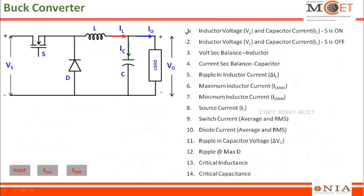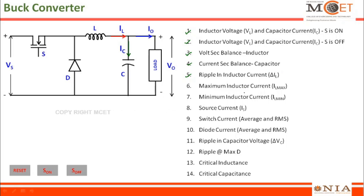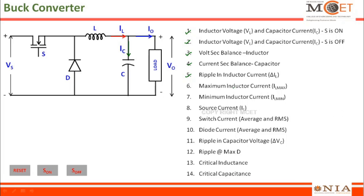We have derived expressions 1 through 7, covering inductor voltage, capacitor current, output voltage, average inductor current, and inductor ripple current. The remaining parameters will be covered in Part 2 of the buck converter video. Thank you for your patience and listening.